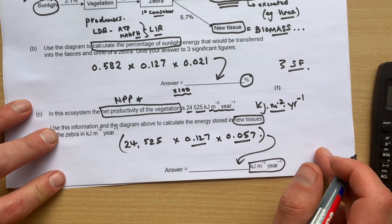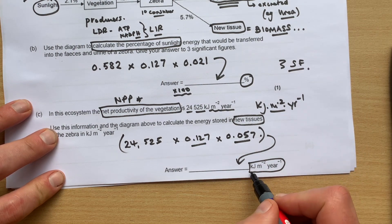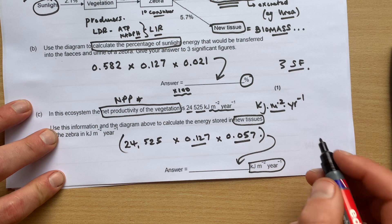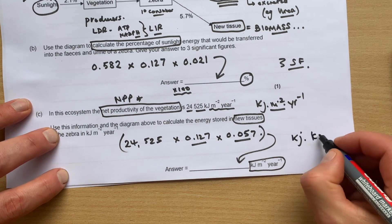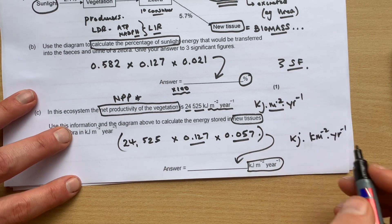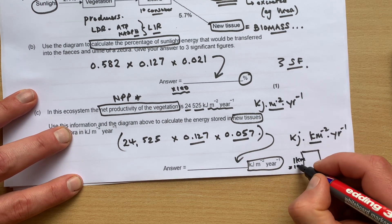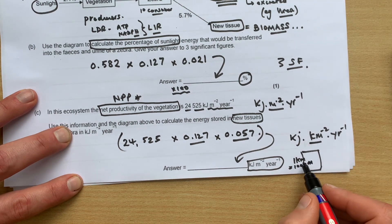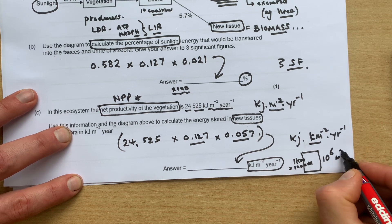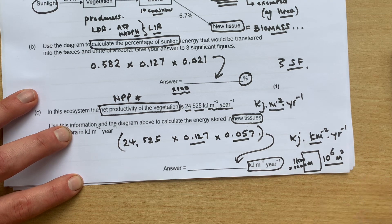Now sometimes what they can do in the question is they can actually ask you to scale up into a different area. So the units of energy for energy transfer are always kilojoules per unit area per unit time, so it might be kilojoules per kilometer squared per year as opposed to just per meter squared. So if you're going to do that, we know one kilometer is a thousand meters, so actually one kilometer squared would be a thousand times a thousand - that's ten to the six meters squared. So one kilometer squared is equal to a million meters squared, so then you could scale up your answer if needed.